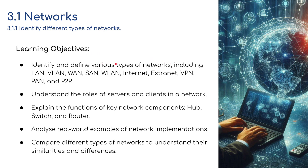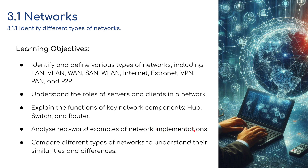Learning objectives for this are: identifying and defining various types of networks, including LAN, VLAN, WAN, SAN, WLAN, Internet, Extranet, VPN, PAN, and Peer-to-Peer Networking. We also need to understand the roles of servers and clients in a network, explain the functions of key networking components — i.e. a hub, a switch, and a router — analyze real-world examples of network implementations, and compare different types of networks to understand their similarities and differences.